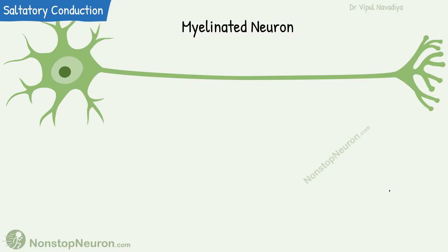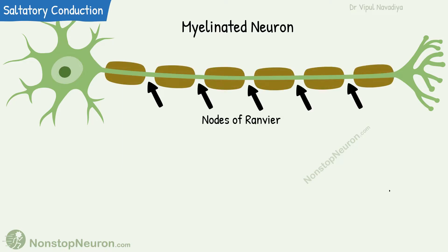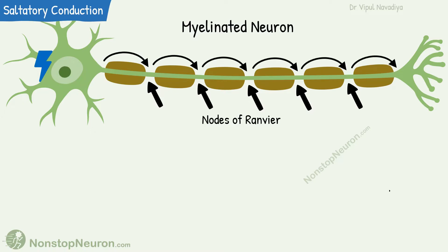Saltatory conduction in neurons is just like this. Myelinated neurons have nodes of Ranvier that work like lighthouses. When the neuron is activated at one end, the action potential jumps from one node of Ranvier to the next node. So the signal is transmitted very fast.